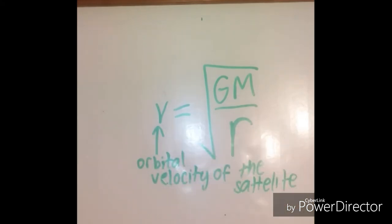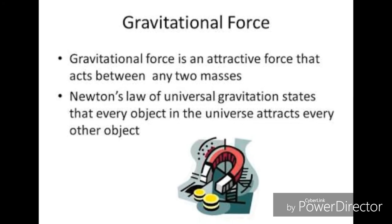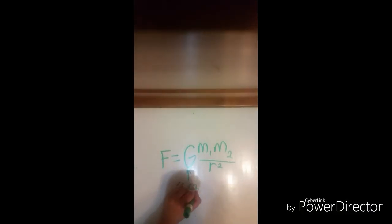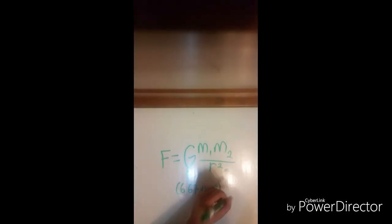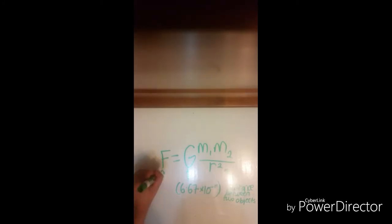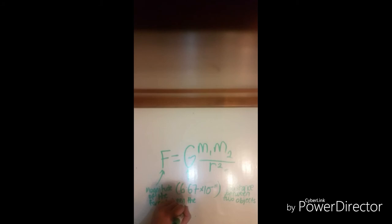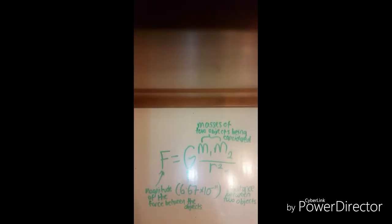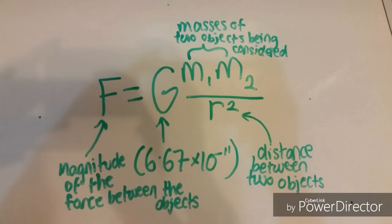In order to calculate the gravitational force between two objects with masses m₁ and m₂, the equation is F = G·m₁·m₂/r², where G is the gravitational constant 6.67 × 10⁻¹¹, r is the distance between the two objects, and F is the magnitude of the force between the objects.